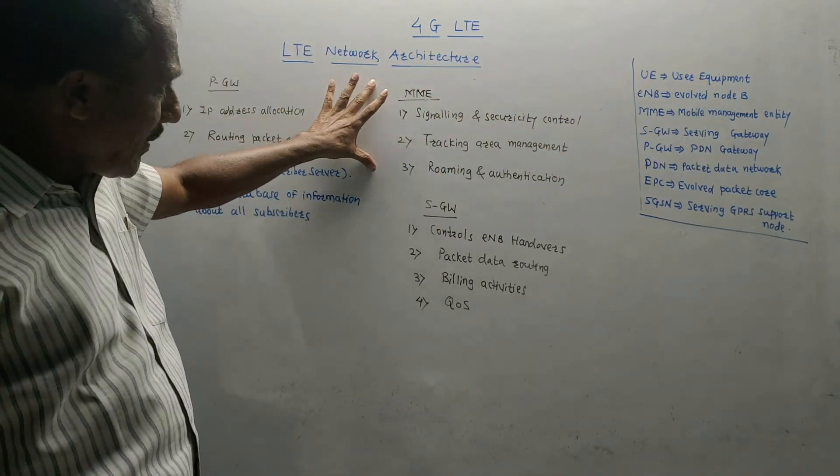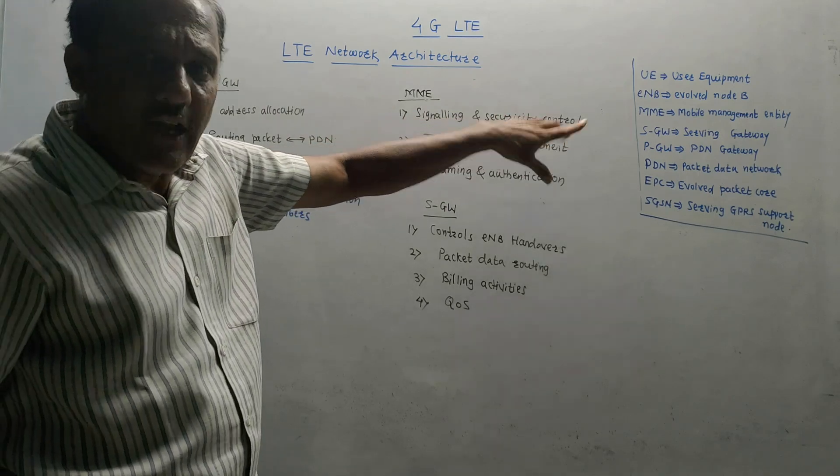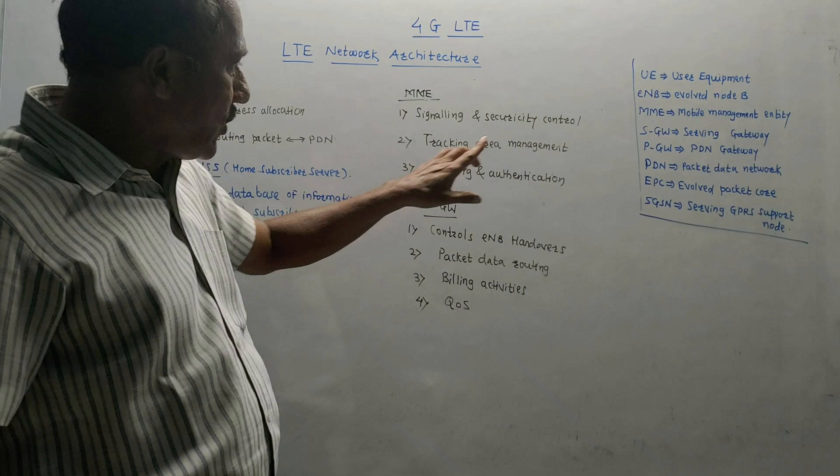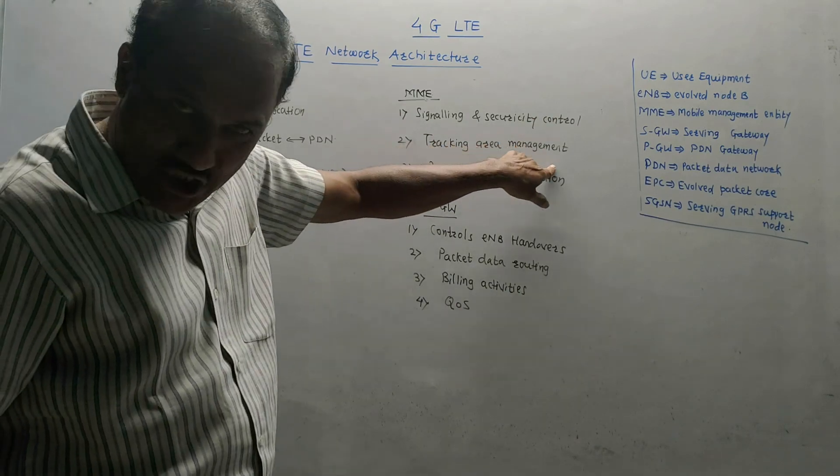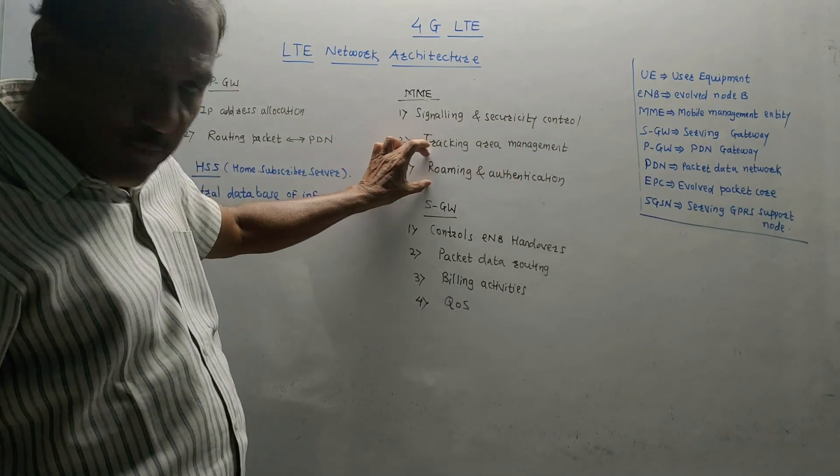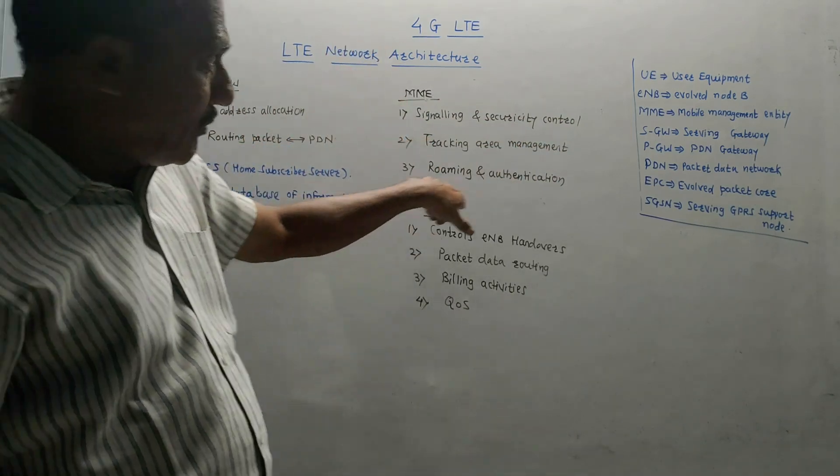Functions of MME are signaling and security control. It manages all the signaling activities and security control activities. Then tracking area management and roaming and authentication. This is an important function done by the MME.